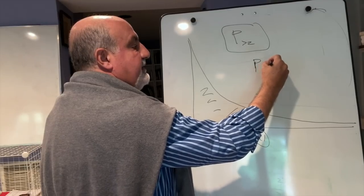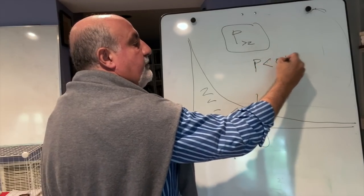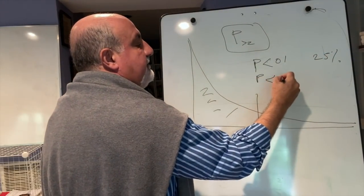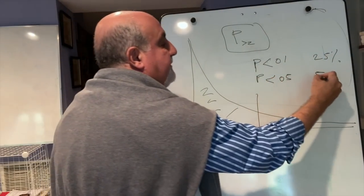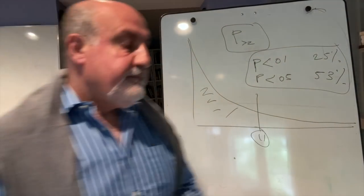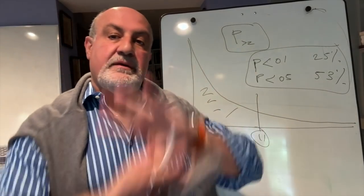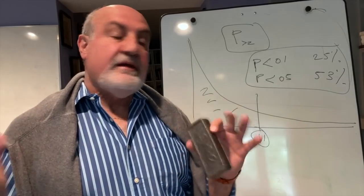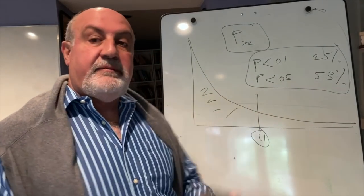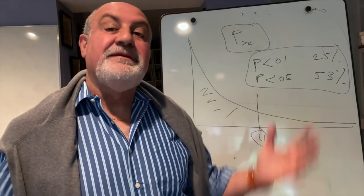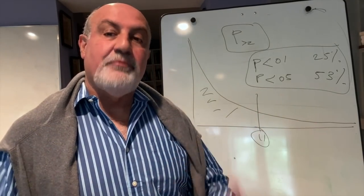The probability the p-value less than 0.01 is 25 percent, and you're going to p-value less than 0.05, 53 percent.